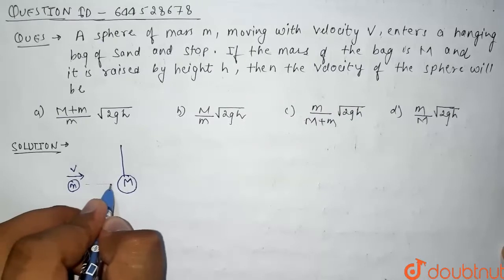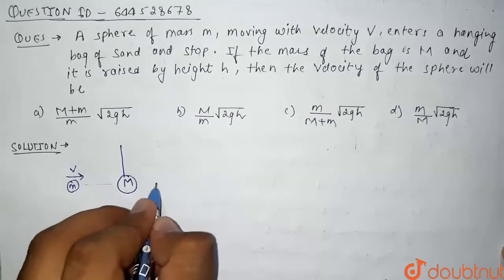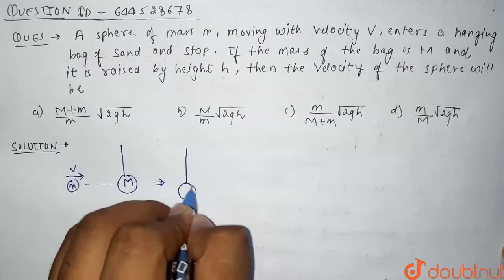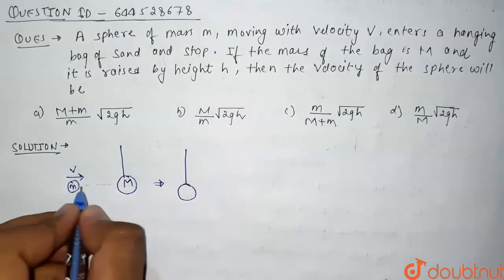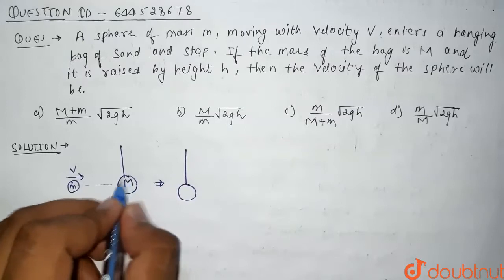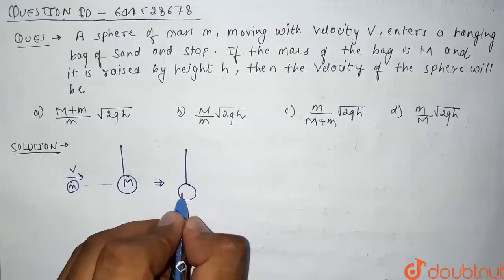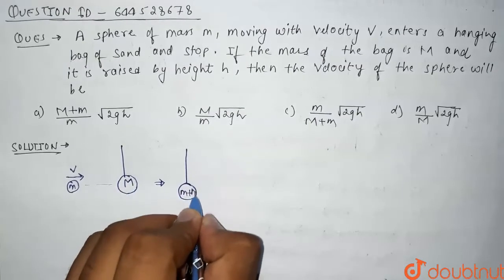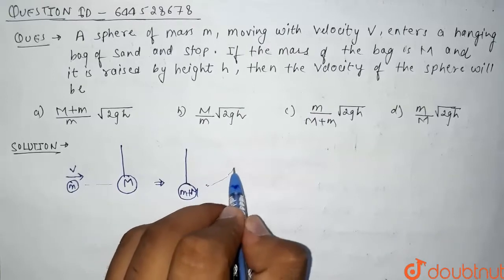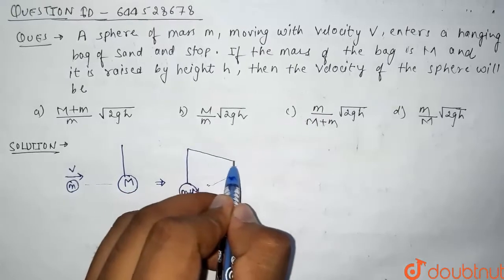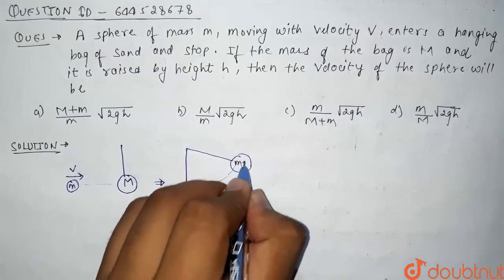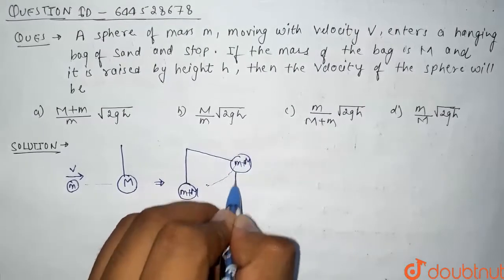Now after striking this sand bag, the situation will be something like this. The total mass of the system when this sphere goes into the bag of sand becomes small m plus capital M. So after striking, it rises to a height h — that is, the combined mass small m plus capital M rises to height h.